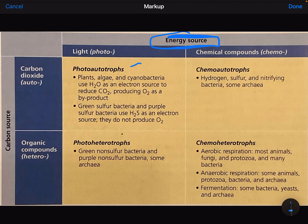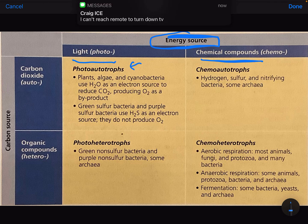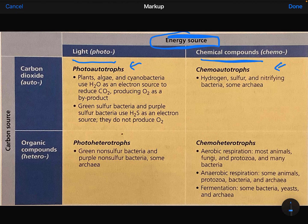In photoautotrophs, for example, they take in light and light drives the reactions that eventually end up producing ATP. The other possibility is to use chemicals to drive the reactions that manufacture ATP.